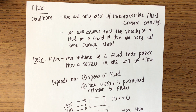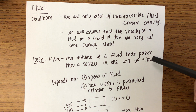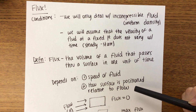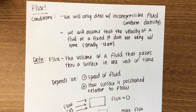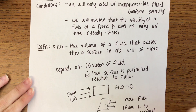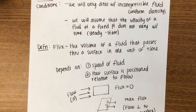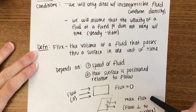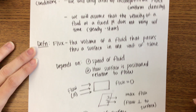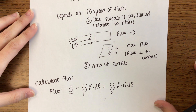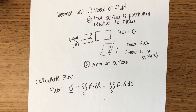Where we left off yesterday, we were in the middle of talking about flux. We talked about flux as the volume of fluid that passes through a surface. It depends on three different factors: how fast the fluid is moving, how the surface is positioned. If the flow is parallel to the surface there's no flux, whereas maximum flux happens when the flow is perpendicular to the surface. We left off talking about how to calculate flux.